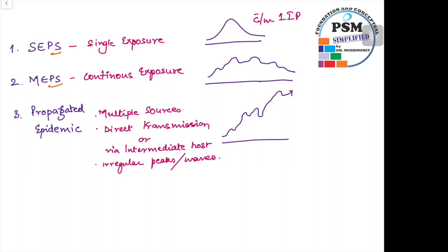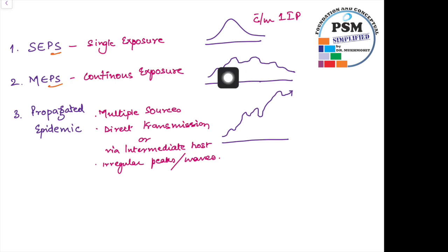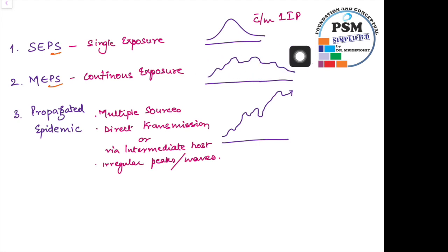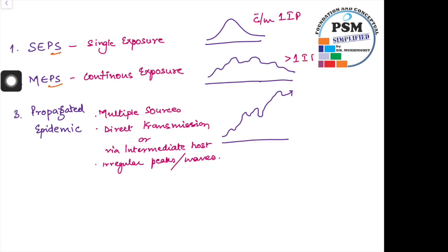In the multiple exposure point source (MEPS), the epidemic curve is not confined to a single time — it is spread over days, weeks, or months. This spread depends on the incubation period of that particular disease, but it is always more than one incubation period.